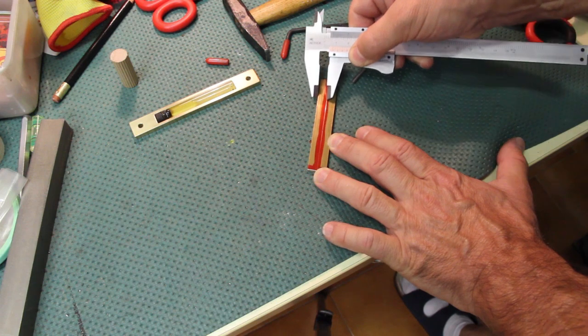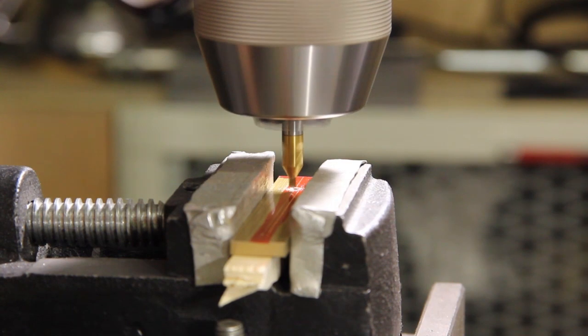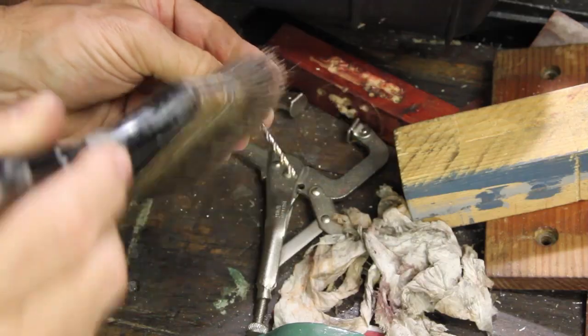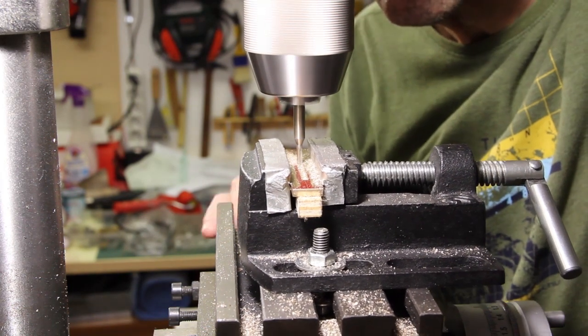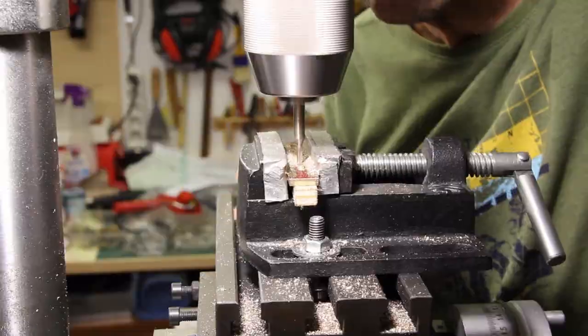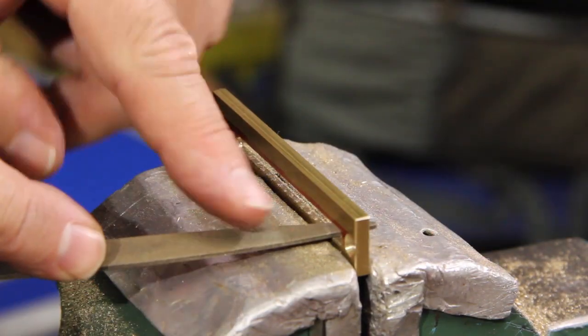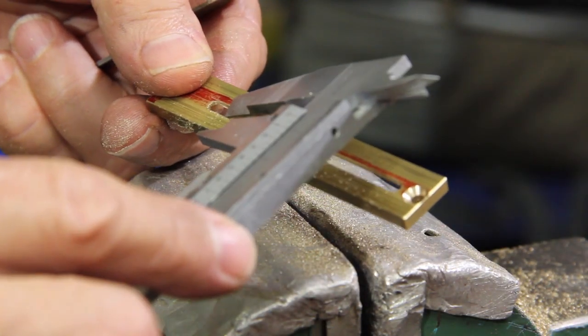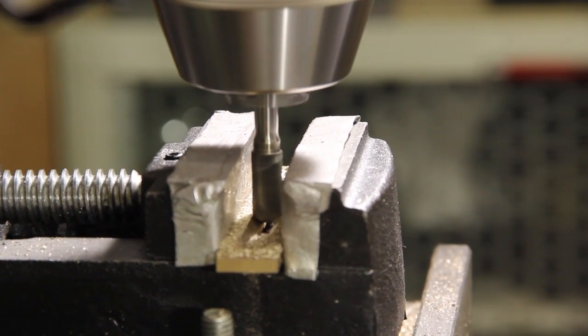The second one becomes the lid of the case. It sports a slot through which the vial will be visible. Below, a round pocket is engraved to make room for the top side of the vial.